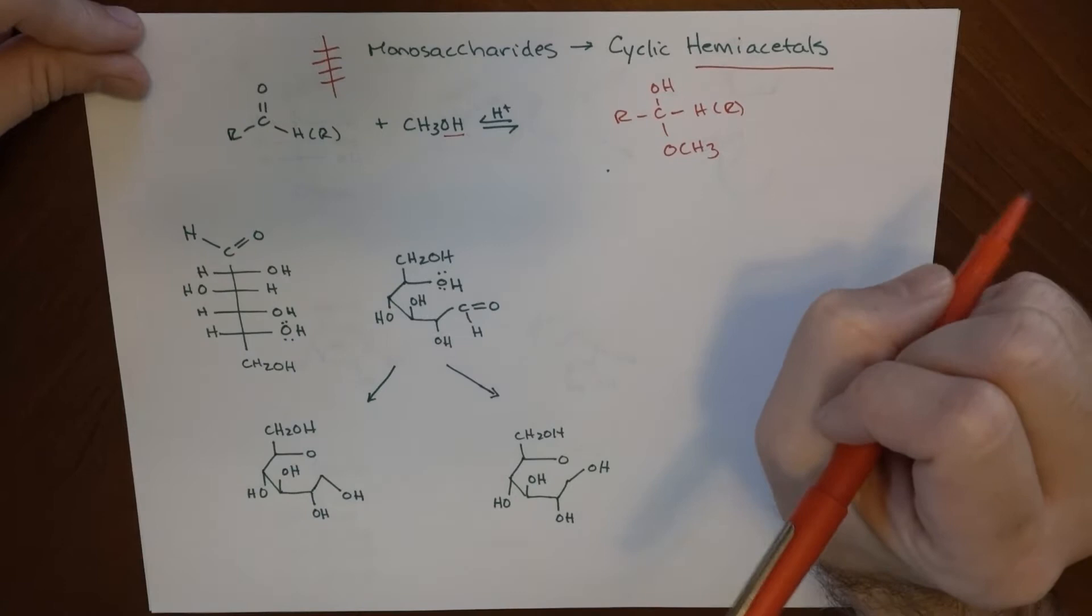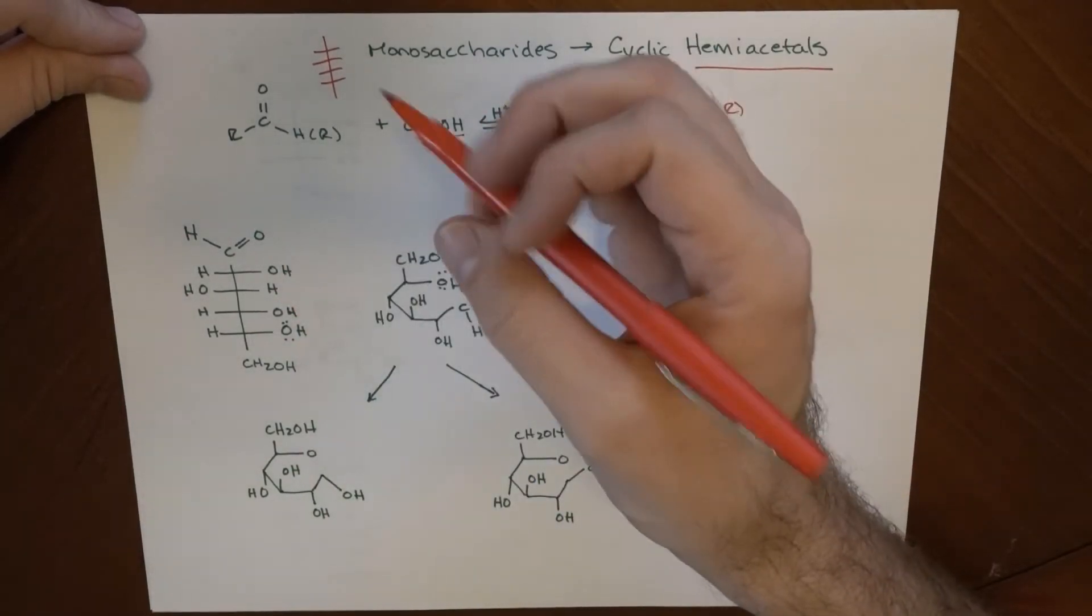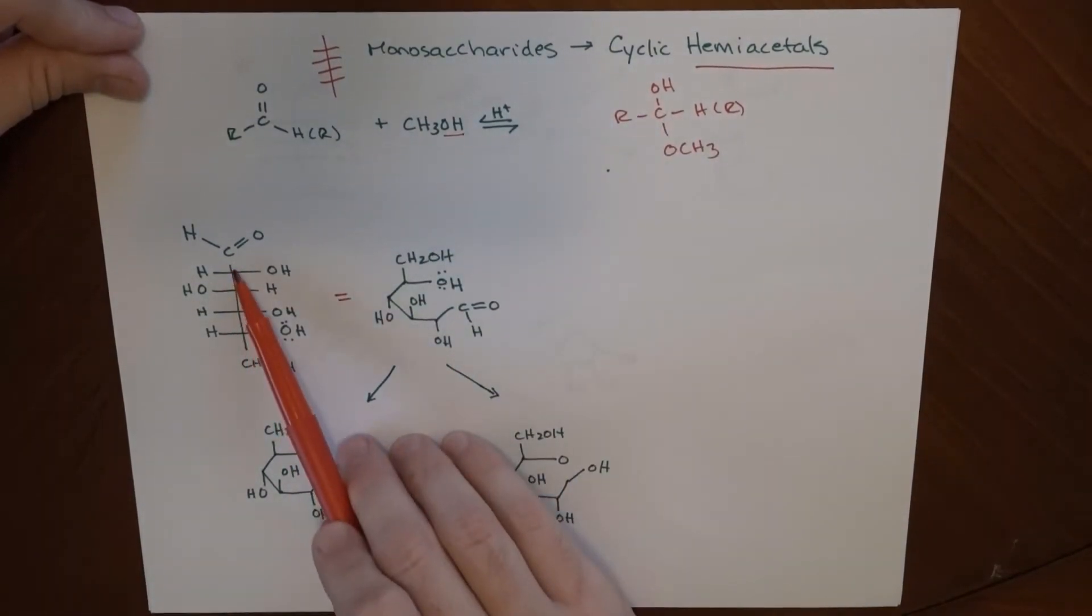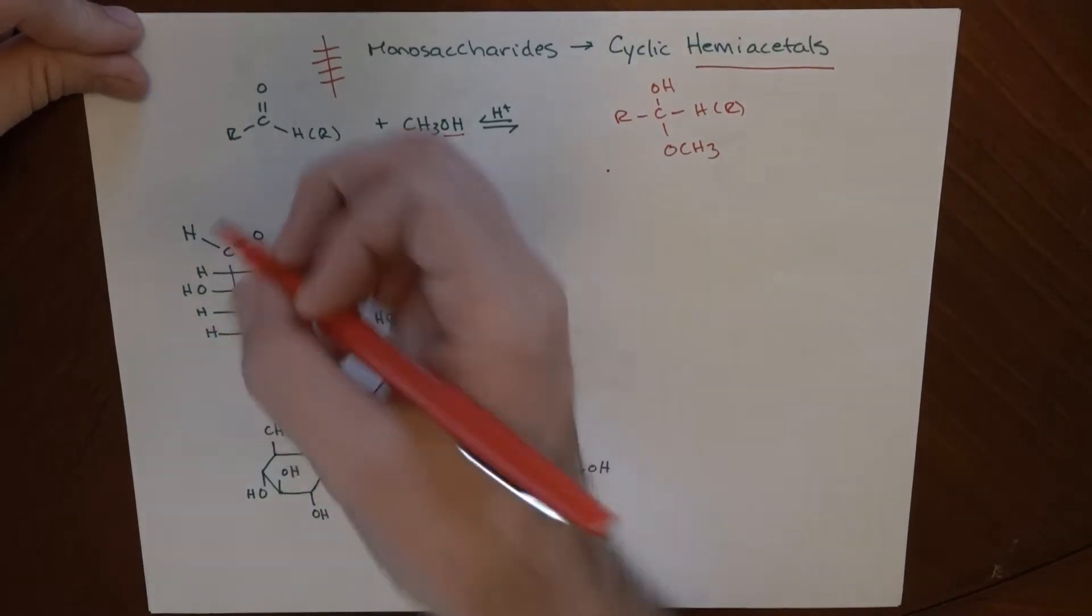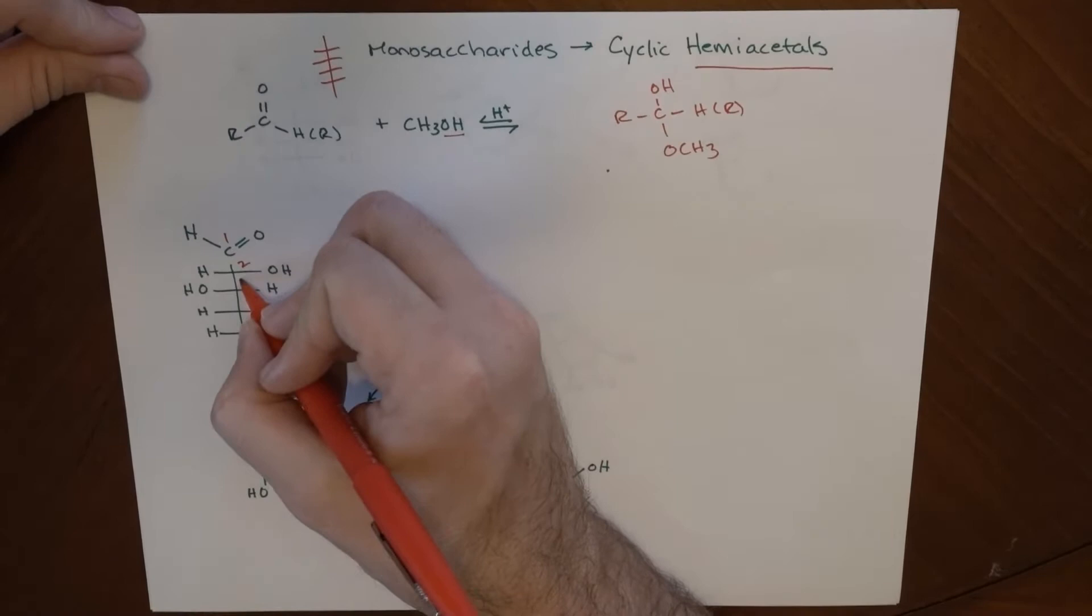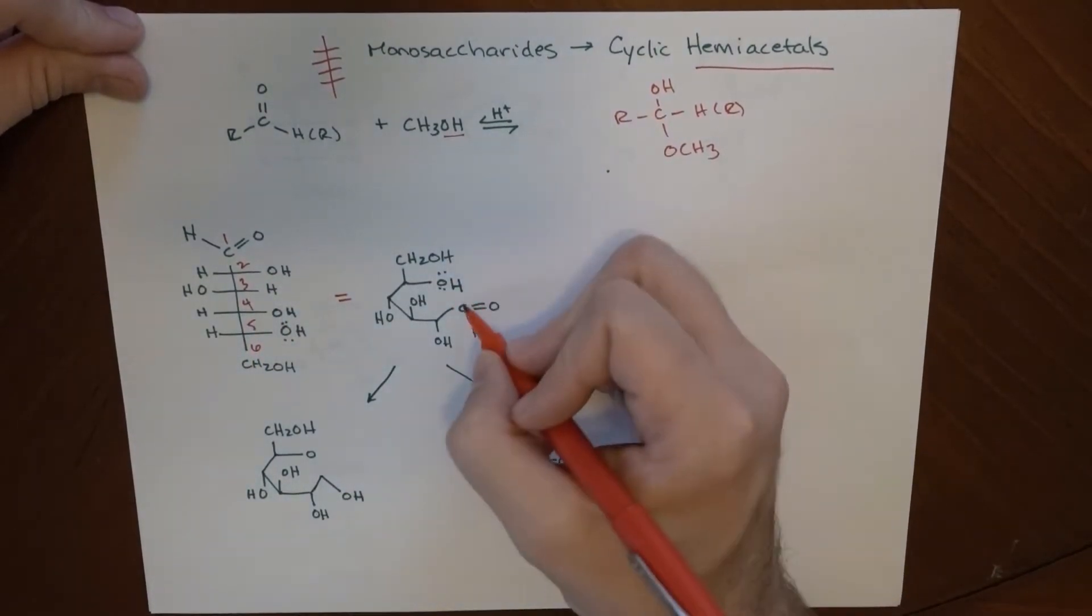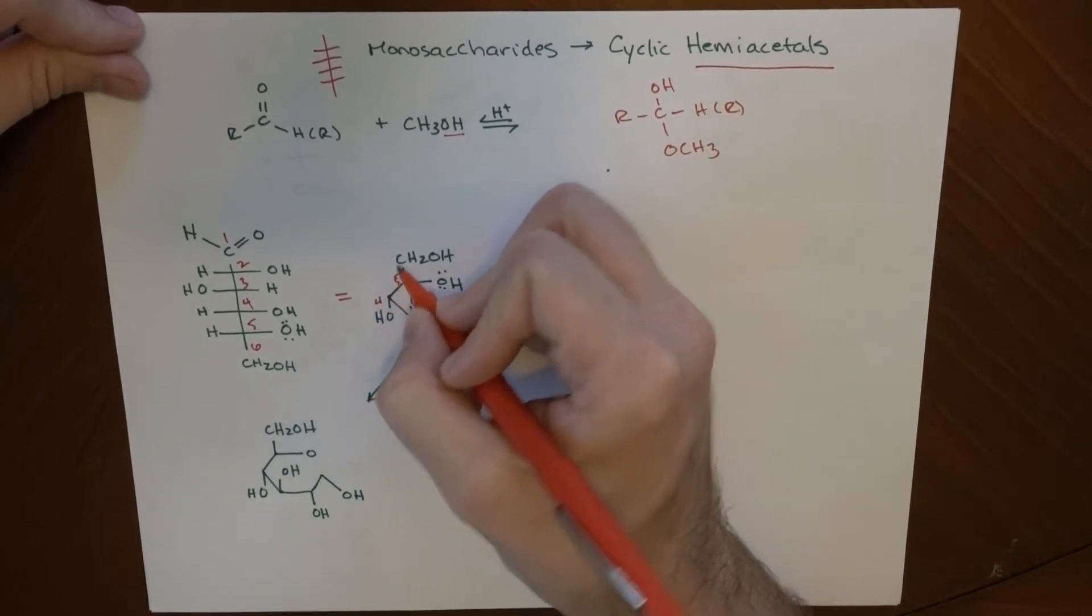So let's take a look at how that might work in a monosaccharide becoming a cyclic sugar. So these two are the exact same molecule. I've got one, two, three, four, five, six carbons in a row. If I number them, this is carbon one, two, three, four, five, and six.